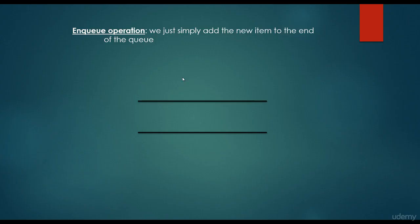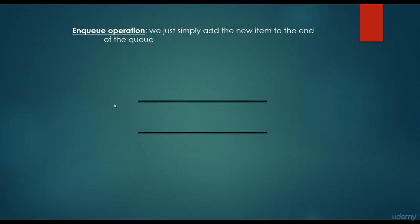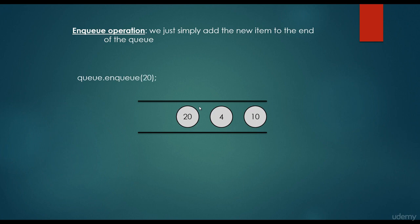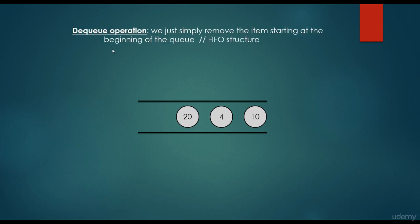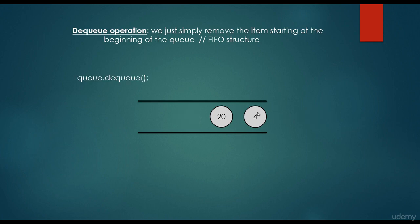So this is the queue abstract data type. We keep inserting items: 10, then 4, then 20. The dequeue operation is going to take the first item we inserted, which is 10. Then we take out 4 when we call dequeue again. This is how the queue abstract data type works.